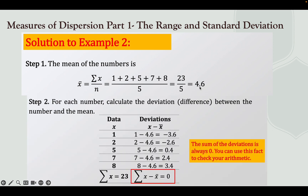In step 2, we need to find the deviation. Write the data in the x column: 1, 2, 5, 7, and 8, with a summation of 23.